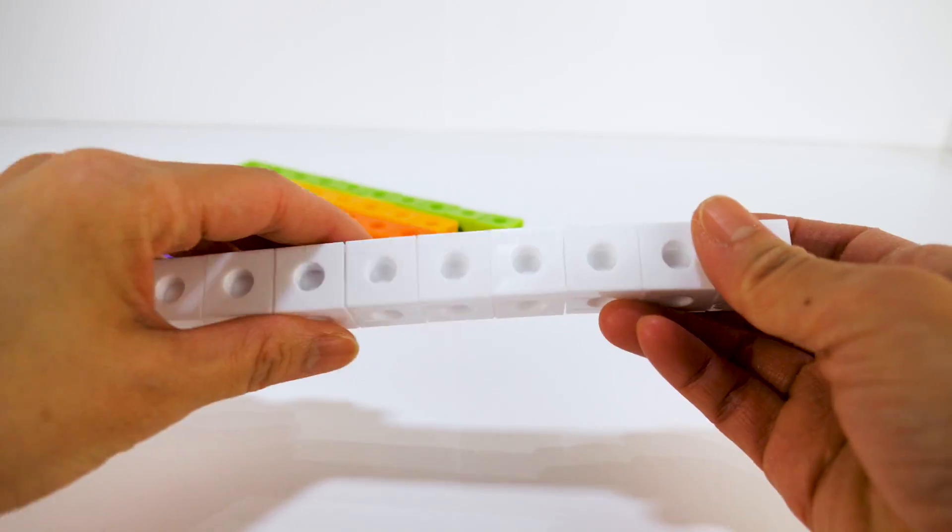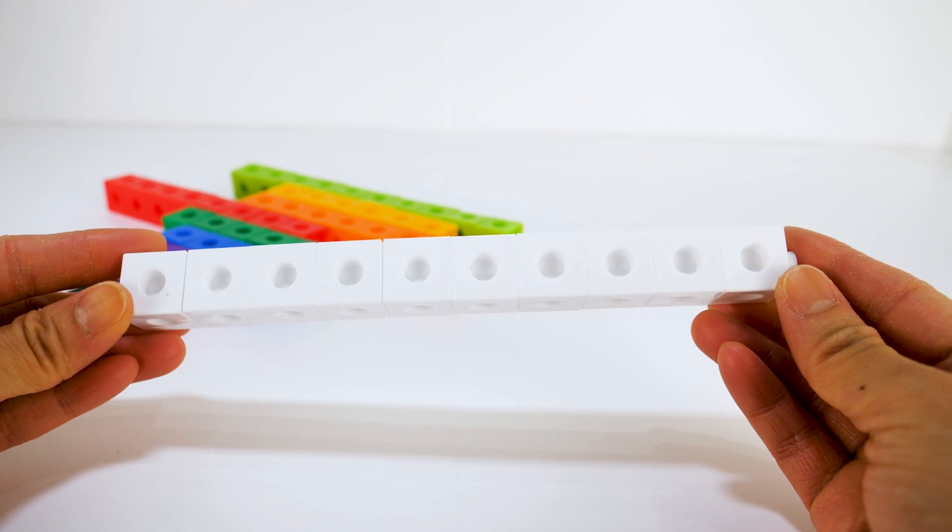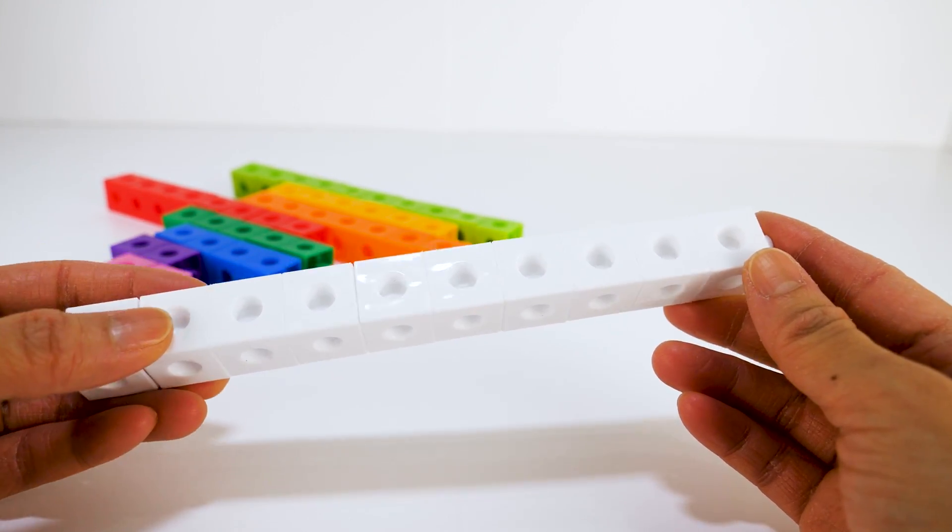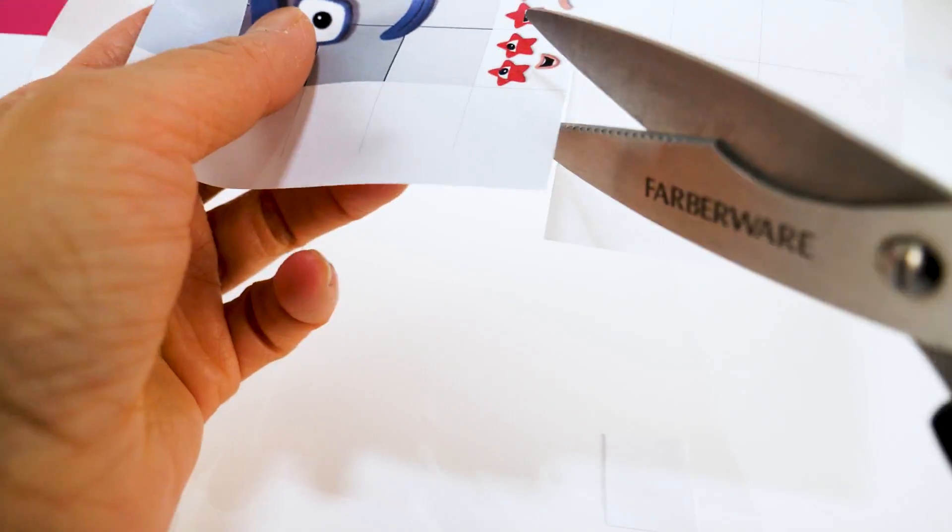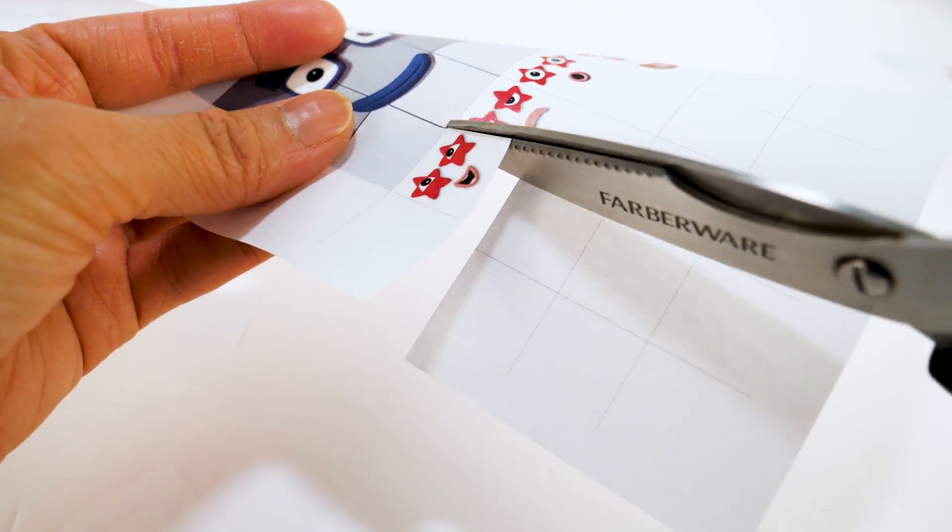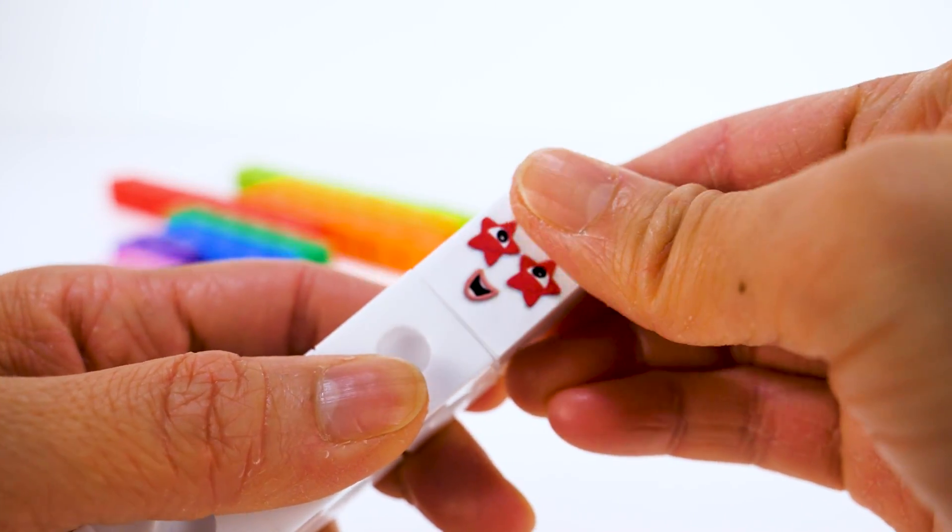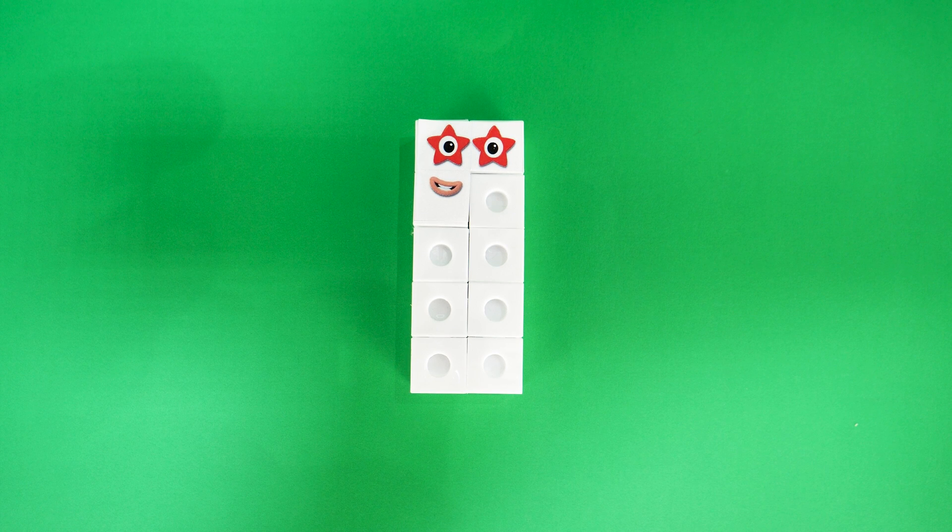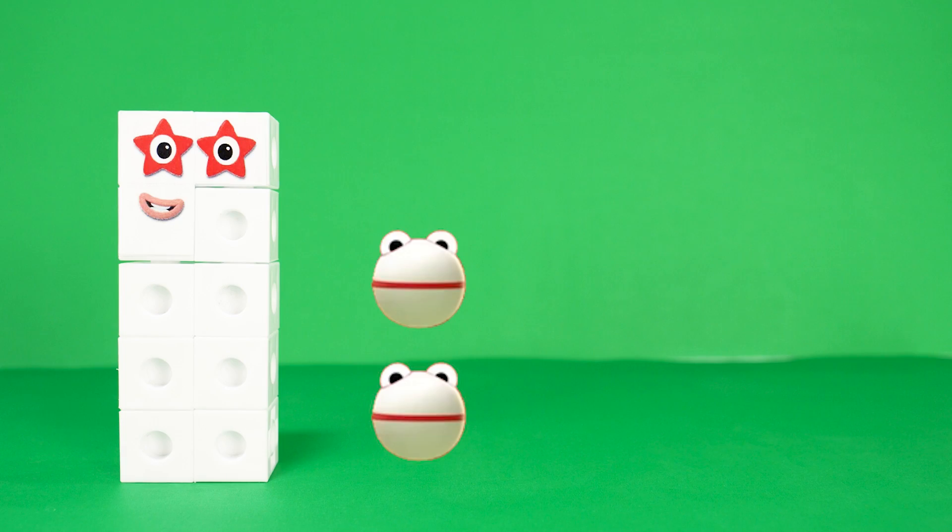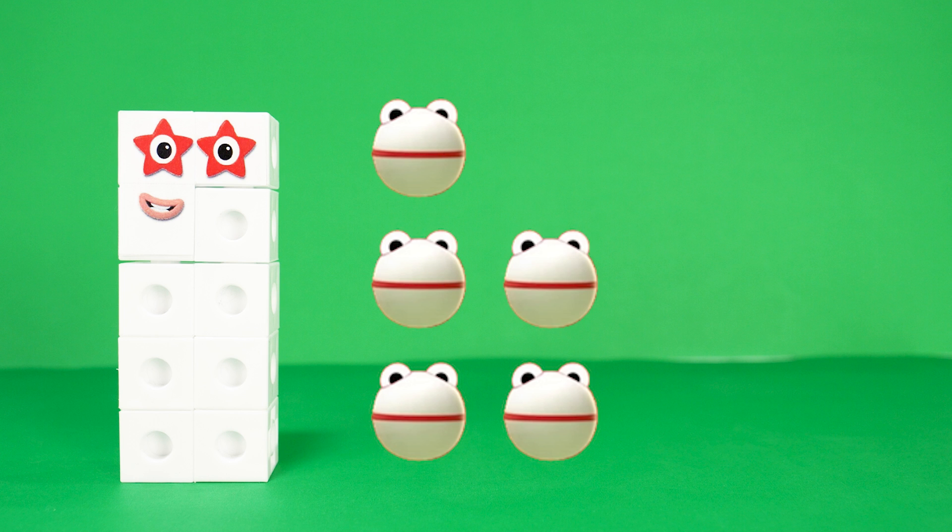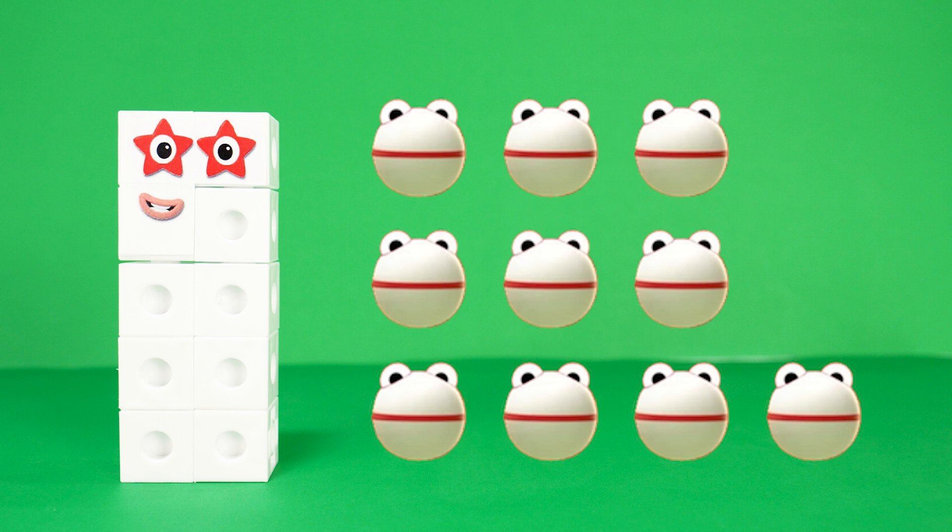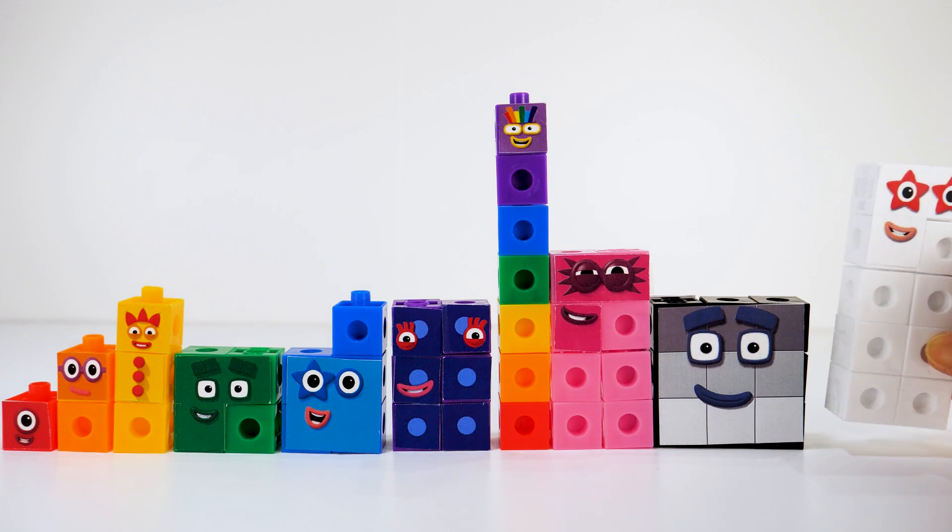The last number block is number block 10. She is made up of 10 white blocks. Number block 10 can turn into a rocket and fly into space. She has star-shaped red eyes. Number block 10 can be rearranged into a rectangle. 1, 2, 3, 4, 5, 6, 7, 8, 9, 10. Number block 10.